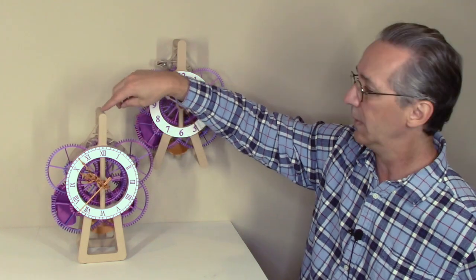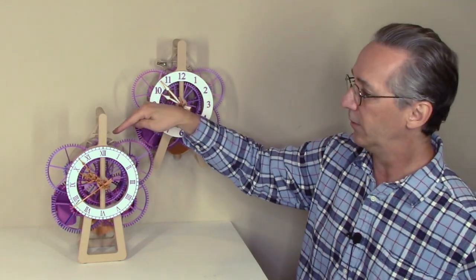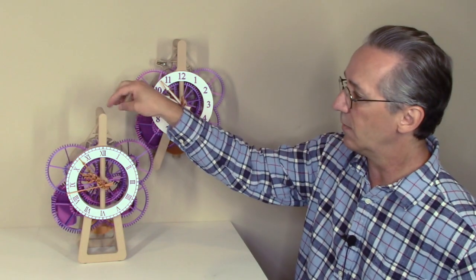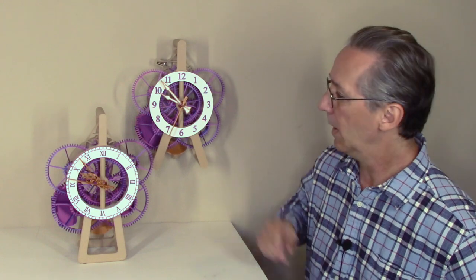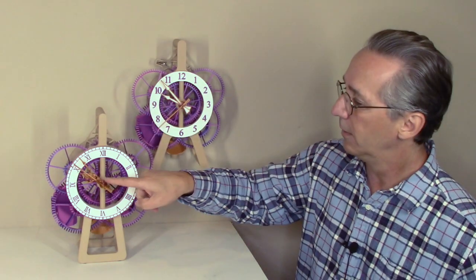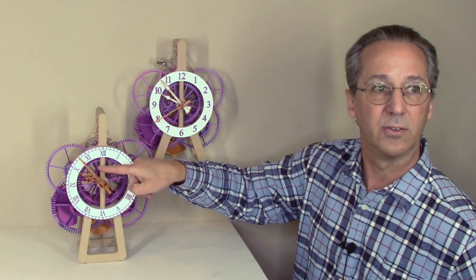The deadbeat escapement has 120 small ticks per minute. Each of those ticks is a little bit smaller, makes the clock quieter. I actually like the deadbeat escapement a little bit better. The side effect there is the second hand has 120 ticks per second, so not quite as natural of a movement, but it makes it a bit of a quieter clock.